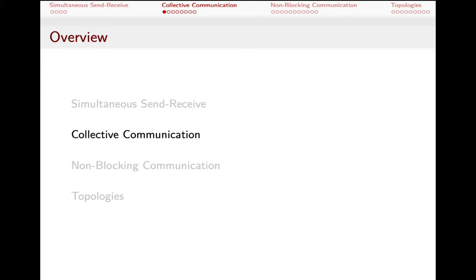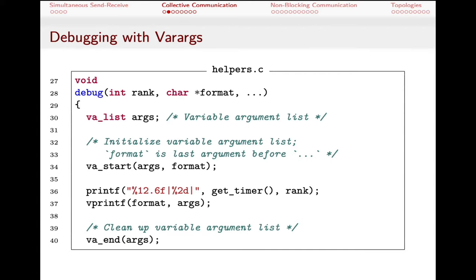Next is collective communication — the ability to broadcast information to more than one other process, specifically to all processes in the multicomputer. Before getting there, here's a useful debugging trick: a custom debug function whose first argument is the rank (which we always want to print), and then a format string followed by variable arguments — just like printf. This uses C's varargs syntax, which may be new if you haven't seen it before.